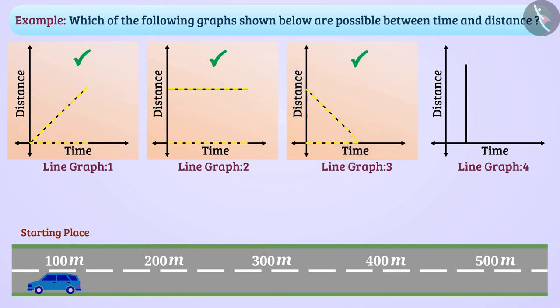Now, can you tell me what line graph 4 shows? In line graph 4, distance is increasing but time is constant. This is not possible. Therefore, there cannot be such a graph between time and distance.